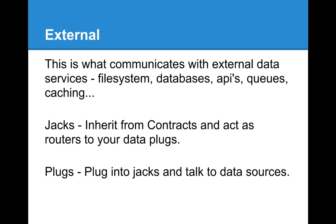External is what communicates with external data services. There are two types: jacks, which are data routers — a jack can have many plugs and is designed to have plugs just plugged right into it — and then plugs, which are the things that actually talk to data sources. So if you wanted to use an ORM, you would use an ORM via a plug. Or you can use something more direct like the SQL gem or the Moped gem for MongoDB. You can also write your own direct queries to whatever data source you want. And they don't have to be databases — these can be used for things like queues, caching, and external APIs.